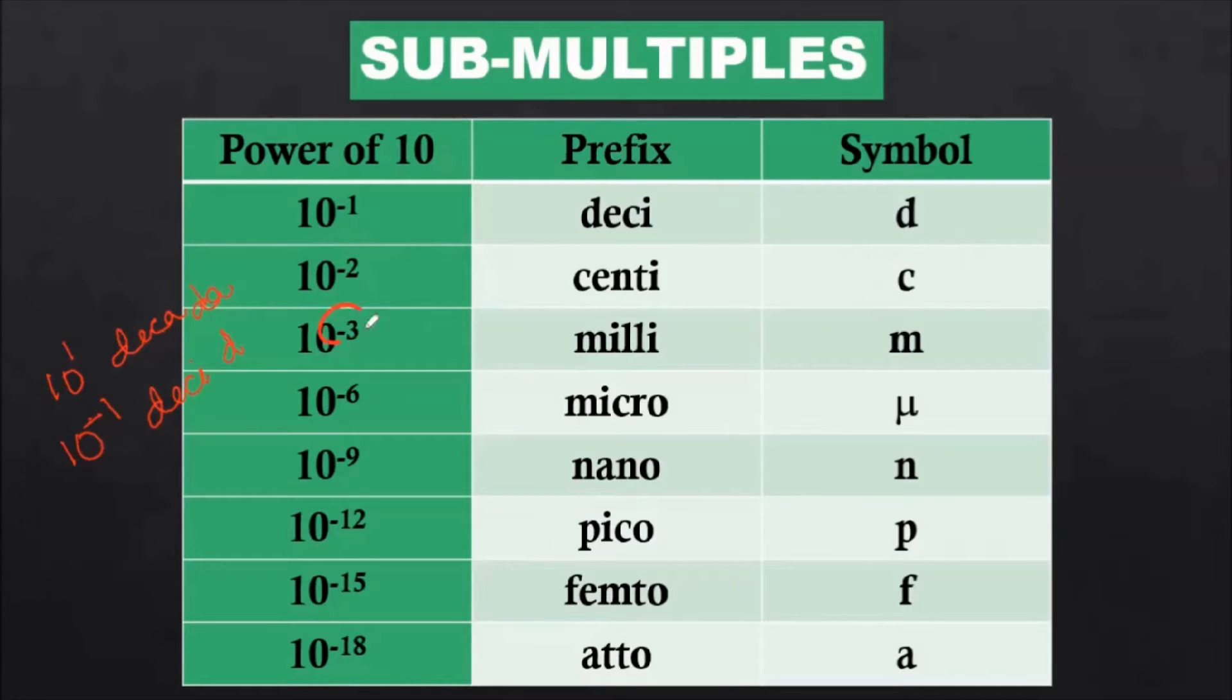Next we have 10 power minus 2: centi, symbol c. 10 power minus 3: milli, symbol m. 10 power minus 6: micro, symbol mu. And please notice here all the letters are small, and only just one, that is the symbol for micro, is a Greek letter, that is mu. That's all our English alphabets.